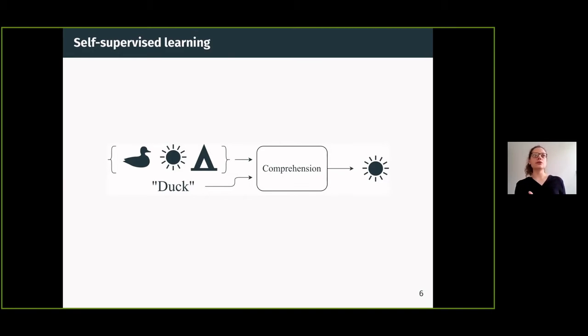Then the comprehension module tries to find the correct object that goes with this label and says, okay, this second object, this sun, is probably the reference. It's wrong, but it doesn't know that.